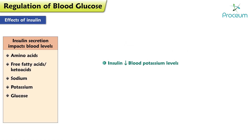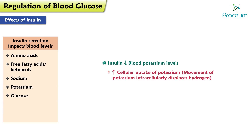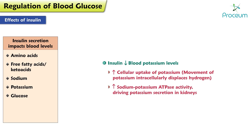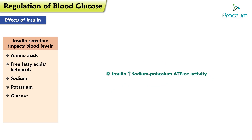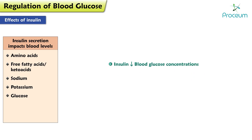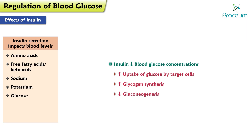Insulin decreases blood potassium levels by increasing cellular uptake of potassium, since movement of potassium intracellularly displaces hydrogen, and by increasing sodium-potassium ATPase activity, driving potassium secretion in the kidneys. Insulin also increases sodium-potassium ATPase activity, driving sodium reabsorption in the kidneys. Insulin decreases blood glucose concentrations by increasing the uptake of glucose by target cells, increasing glycogen synthesis, and decreasing gluconeogenesis.